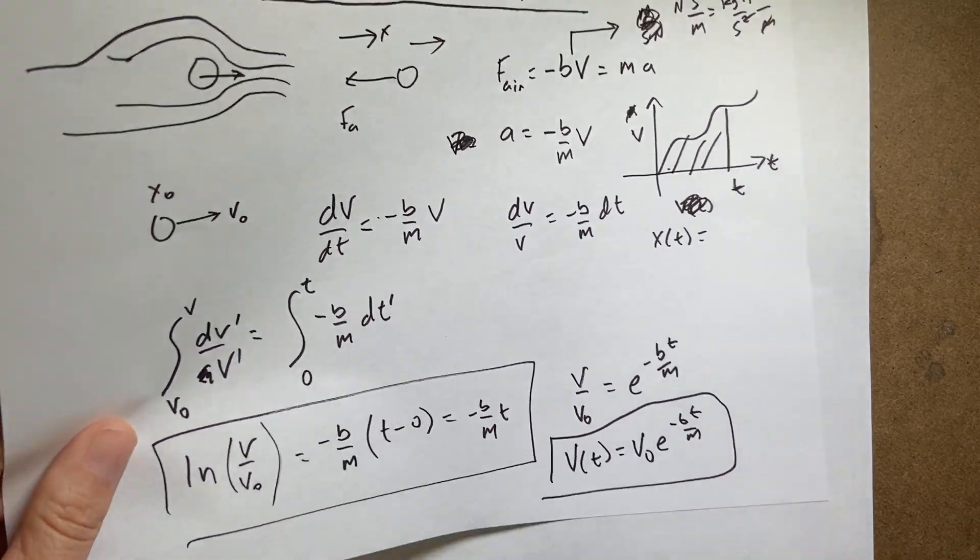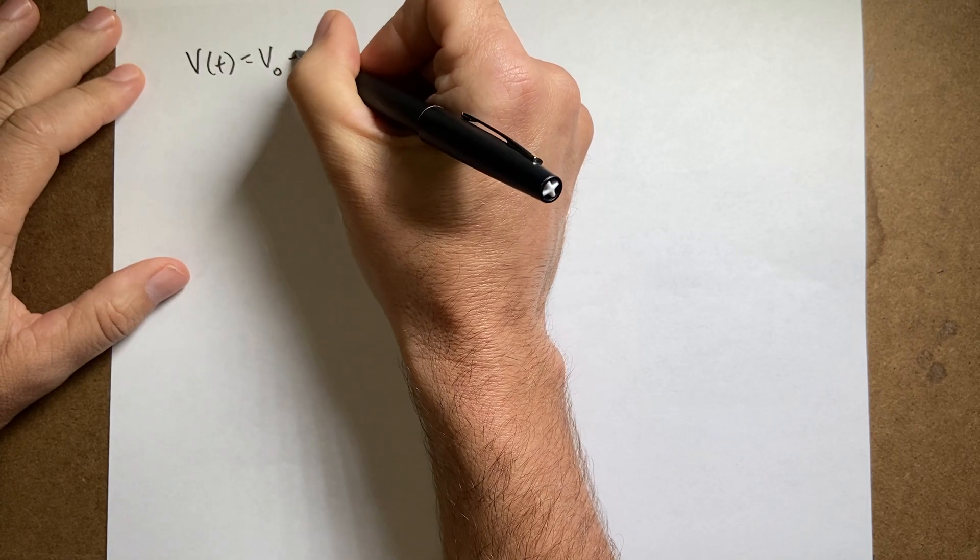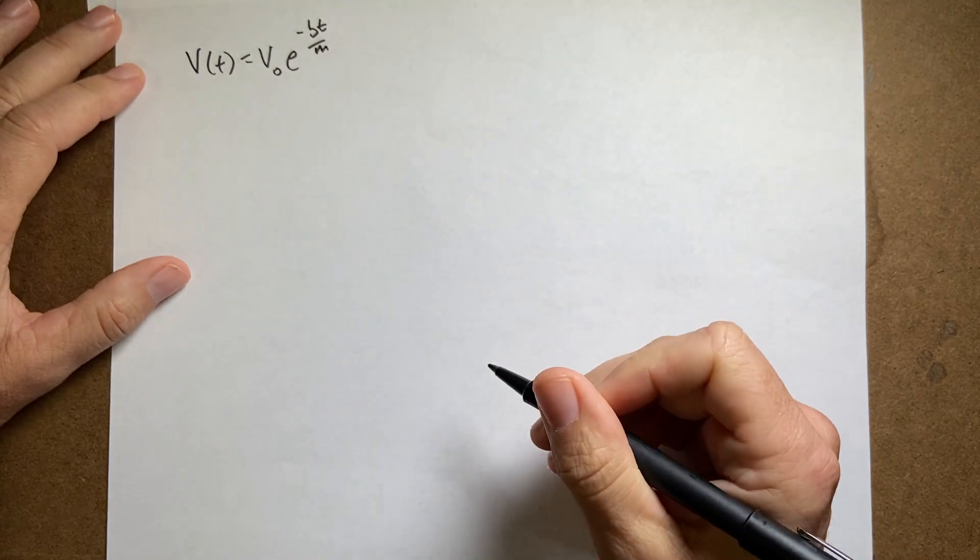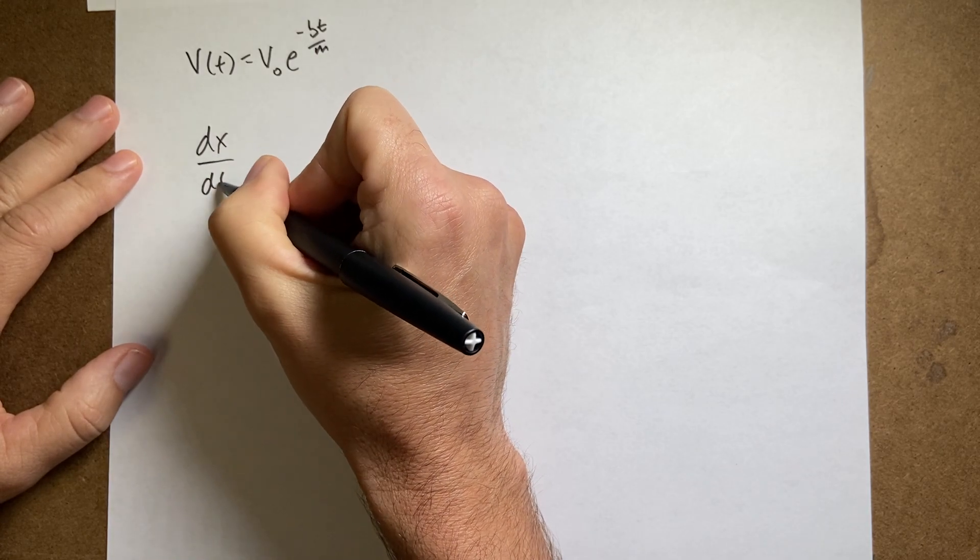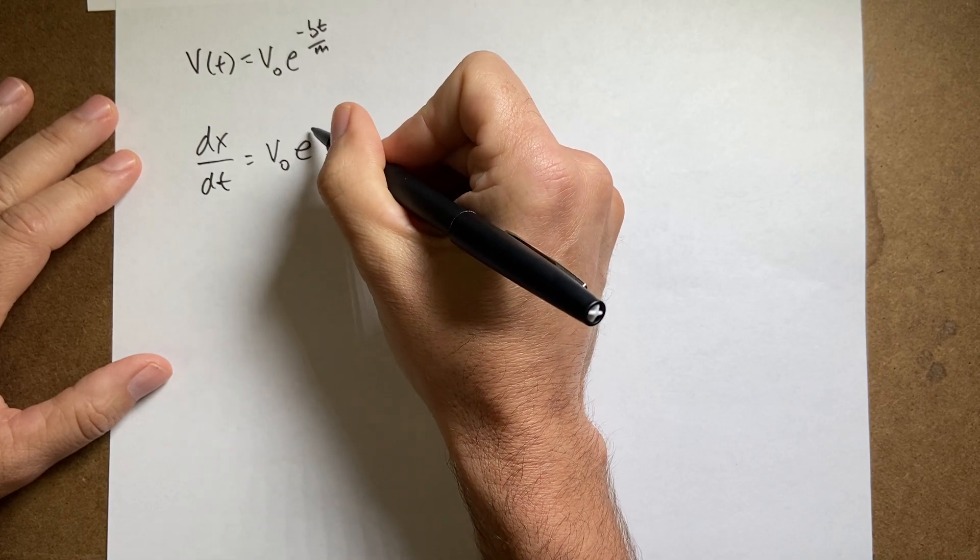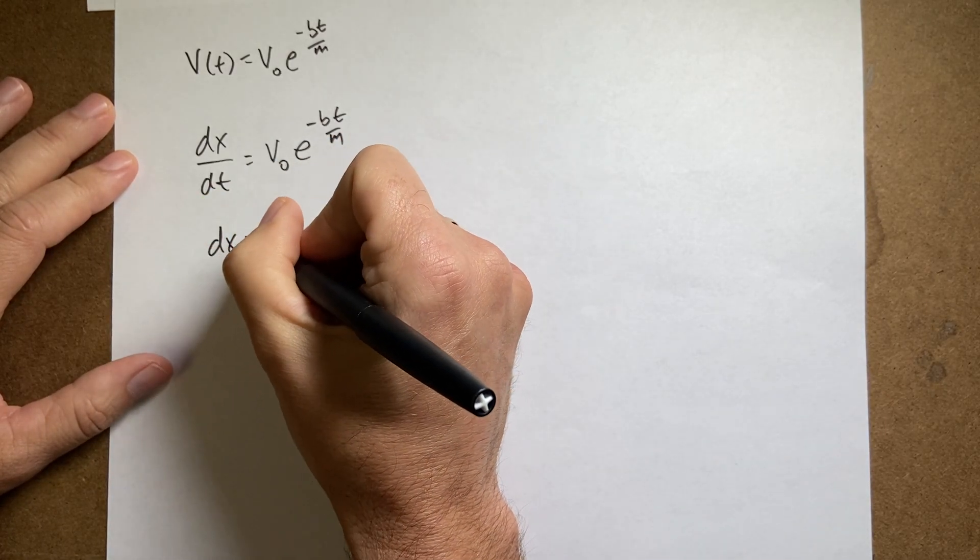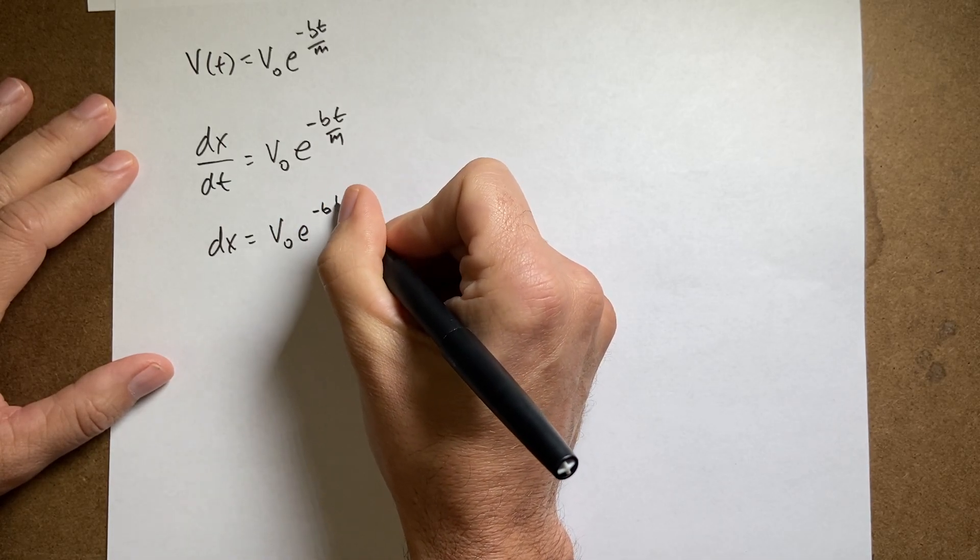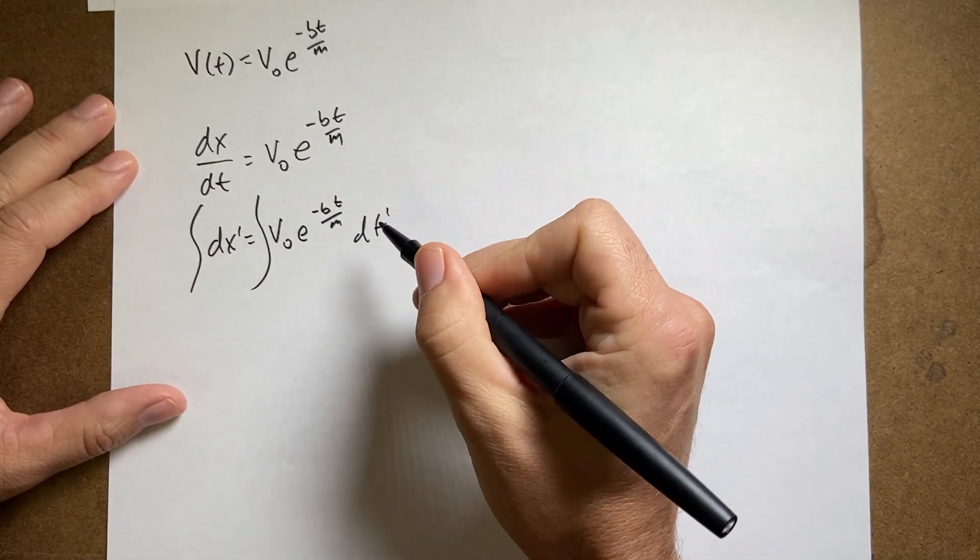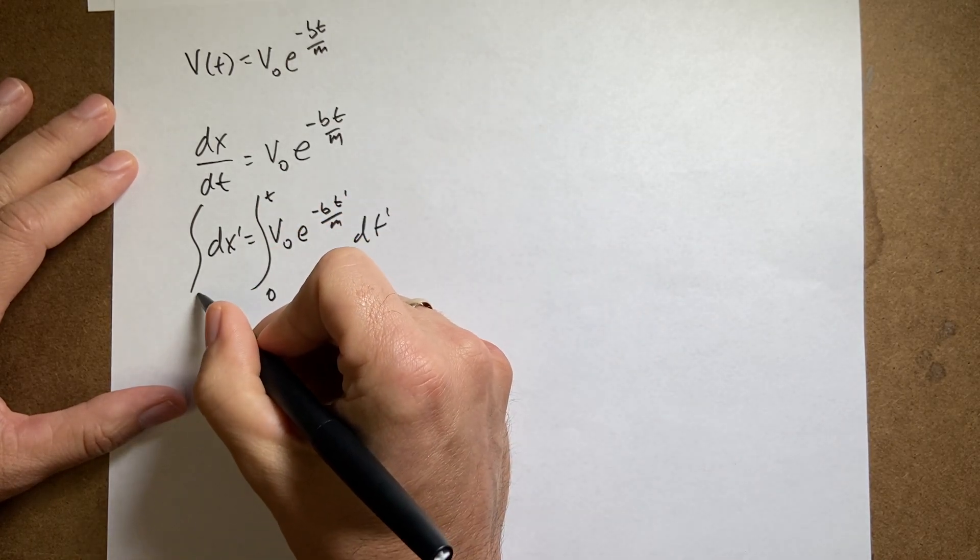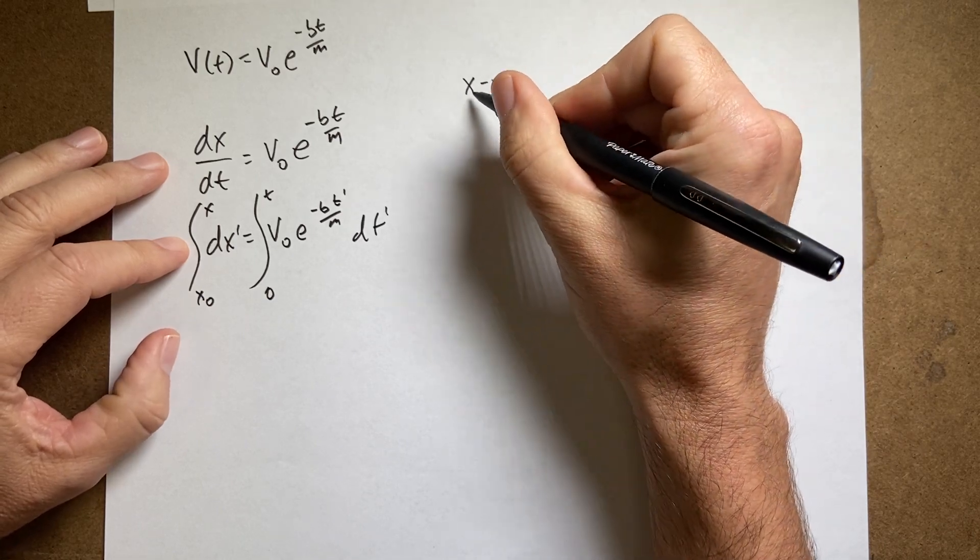Now let's find a function for the position as a function of time. So let's write down my V as a function of T. So I can write this velocity as dx/dt equals V0 e to the negative BT over M. Now I'll multiply both sides by dt and I get dx equals V0 e to the negative BT over M dt. And again, I can integrate both sides. So here I'm going to again use this prime notation. I'm going to go from 0 to T, and here I'll go from X0 to X. So this side of the integration is pretty easy. I get X minus X0 and that's X is a function of T.